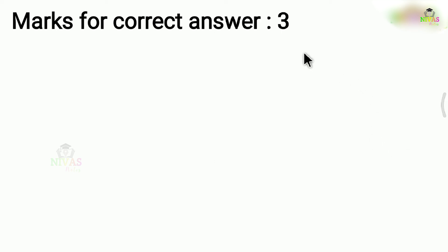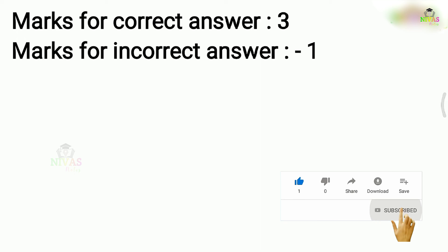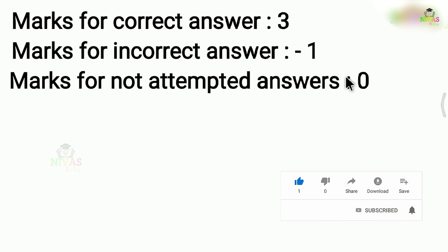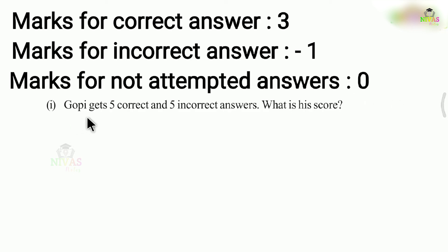One question: if the answer is correct, you get 3 marks. If the answer is incorrect, you get minus 1 mark — that means your mark is cut. If you don't attempt, you get 0 marks. The first problem is: Gopi gets 5 correct and 5 incorrect answers. What is his score?